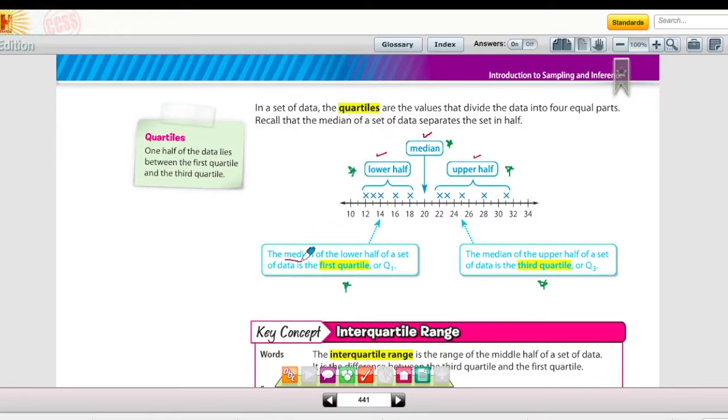And the median of the lower half is called the first quartile, or Q sub 1. The median of the upper half is called the third quartile, or Q sub 3. So make sure you understand that before moving on.